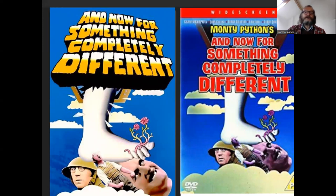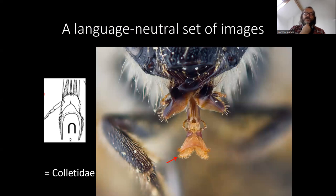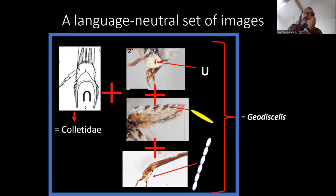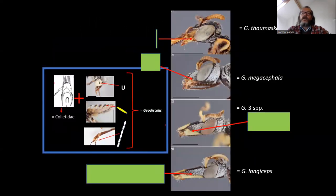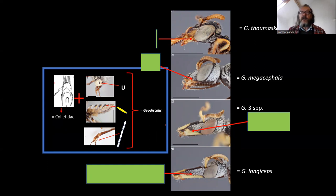Now for something completely different: a language-neutral set of images. I'm sure I'm not the first person to suggest this. Concave glossa — Colletidae. Concave glossa plus a U- or V-shaped epistomal lobe plus the banded metasoma plus undifferentiated maxillary palpomeres — Geodesalis. Four observations to the genus. It helps if you put in figures of the alternatives — so it's either got all of those characteristics, or the alternatives: L-shaped or obtuse epistomal lobe, no color bands, and/or differentiated palpomeres. And once you've got that, you can go straight to species diagrammatically or photographically — relatively easy. Three of the six species in the genus have got the same length malar space, so you need another set of images to differentiate those. Anybody can use this, whether they speak English or not.